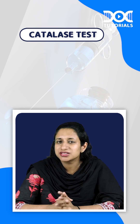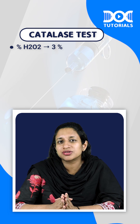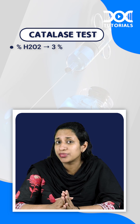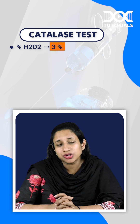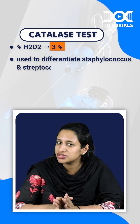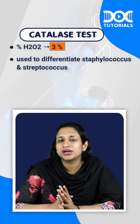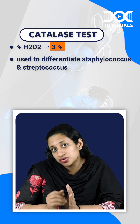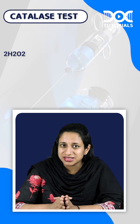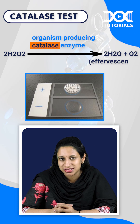One of the important preliminary tests done for the identification of organisms is the catalase test. The percentage of hydrogen peroxide used in this test is about 3%. The catalase test is mainly done to differentiate between staphylococci and streptococci. Here you're trying to identify the organism which produces the catalase enzyme, which breaks down hydrogen peroxide and produces oxygen, appreciated in the form of effervescence.